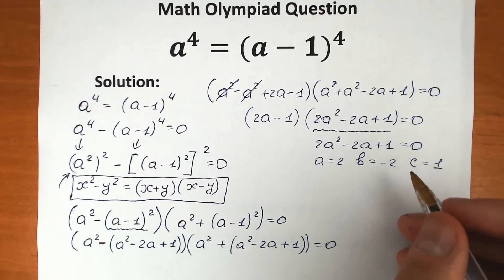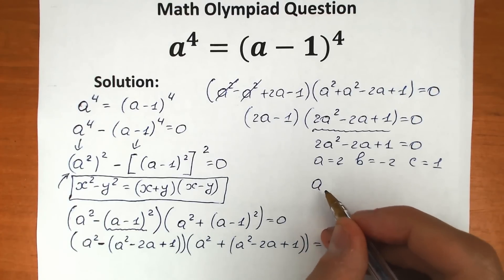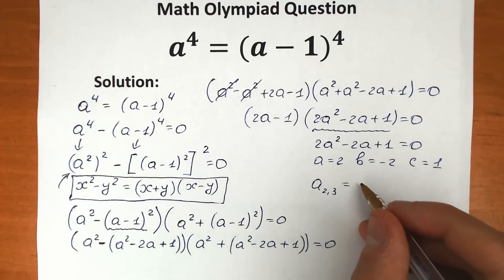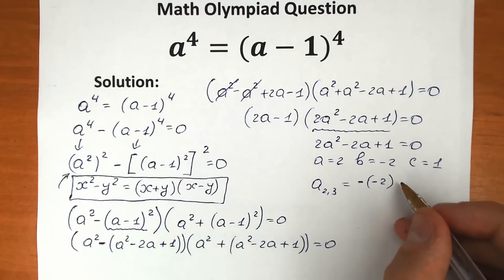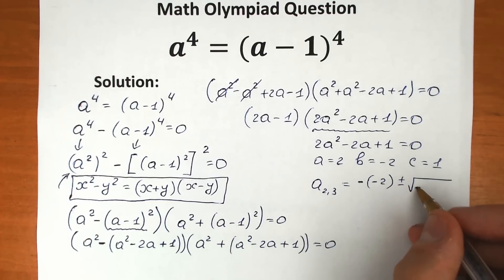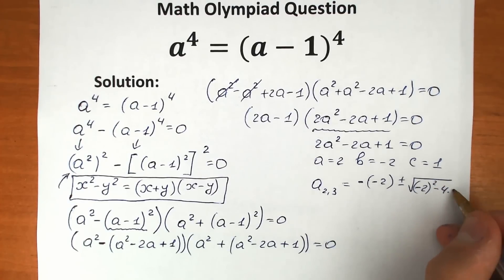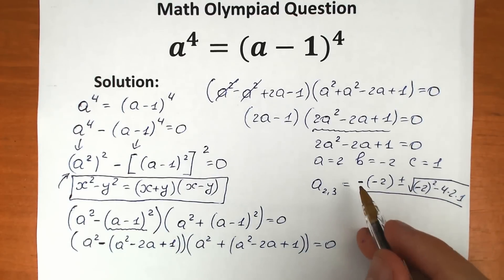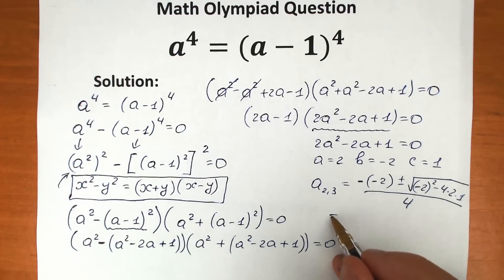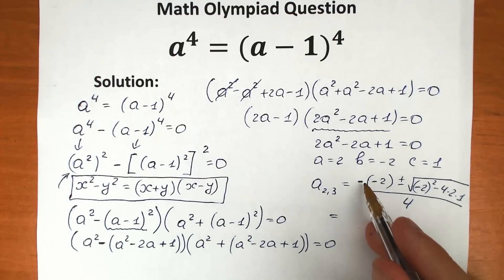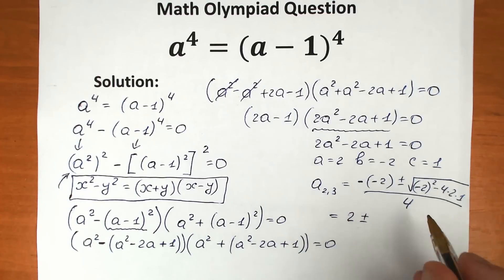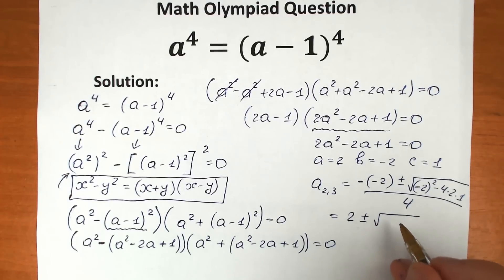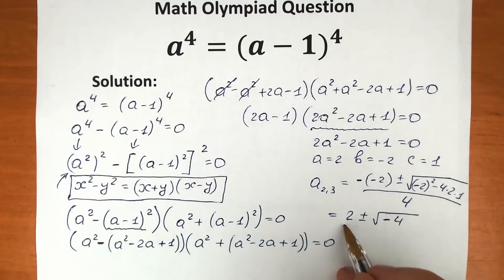Let's apply the quadratic formula. We have a₂,₃ equal to minus b plus or minus the square root of (b squared minus 4ac), all over 2a. Substituting: (minus(minus 2) plus or minus square root of (4 minus 8)) over 4. This gives us (2 plus or minus square root of minus 4) over 4.